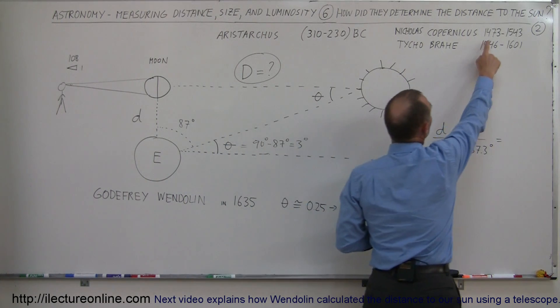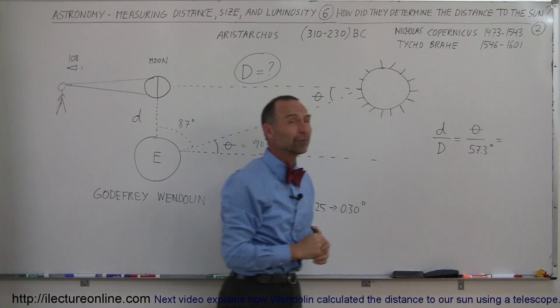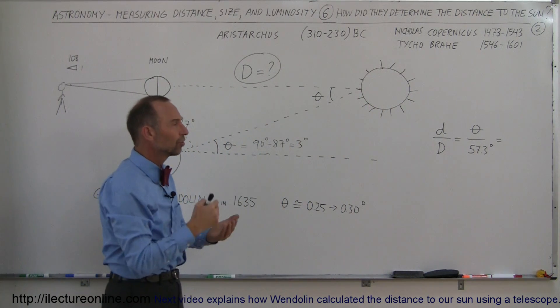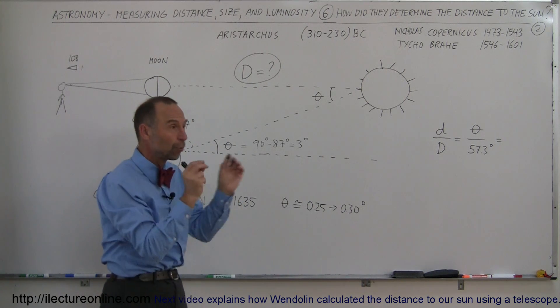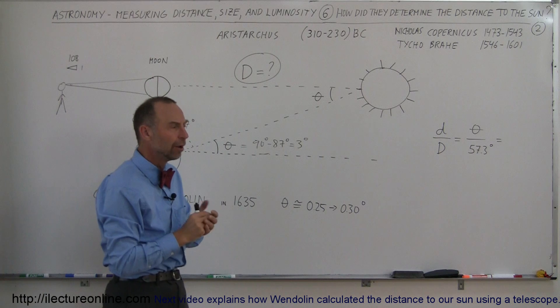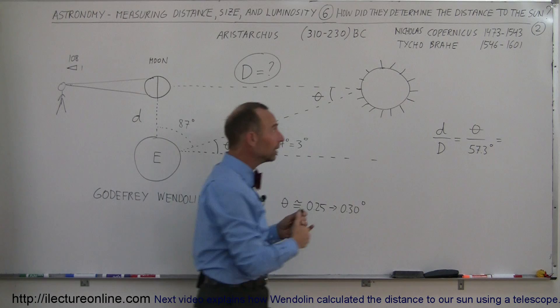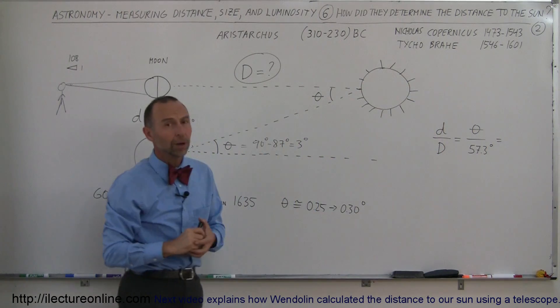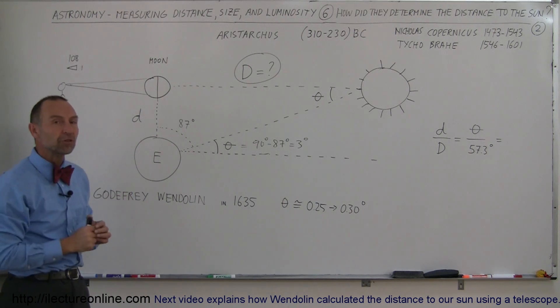And remember, he lived back in the 15th to 16th century between 1473 and 1543. And then Tycho Brahe, the Danish astronomer, who was just amazing in making nightly measurements of where the locations of the planets were, from which Kepler was able to come up with these three laws. Tycho Brahe lived between 1546 and 1601.